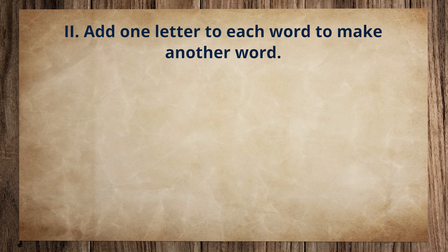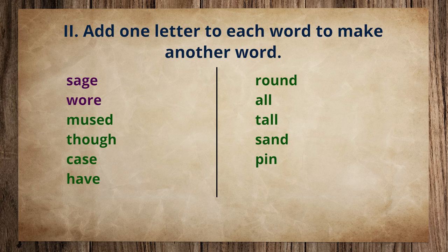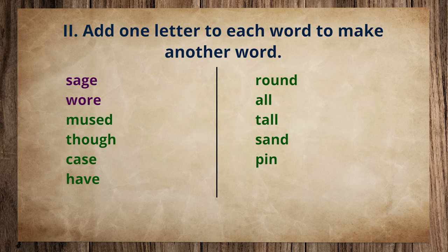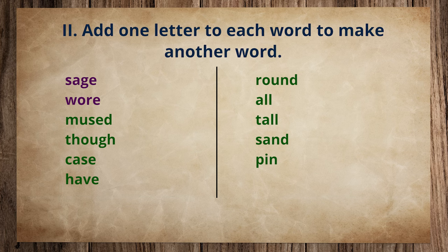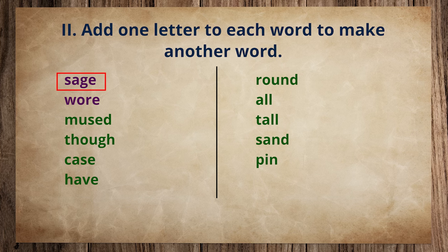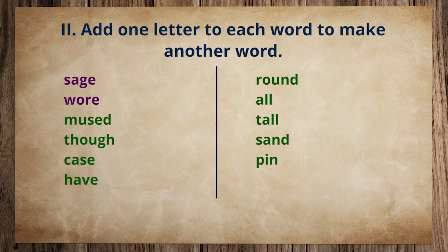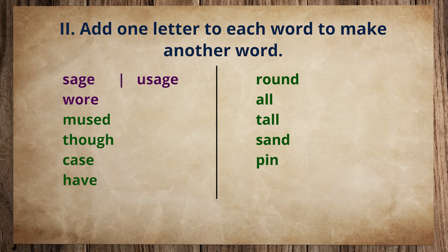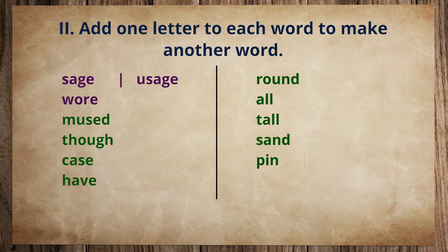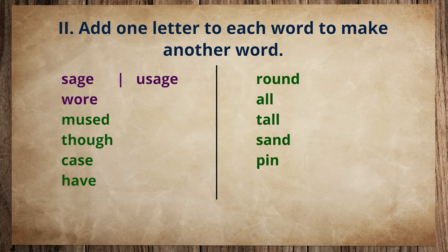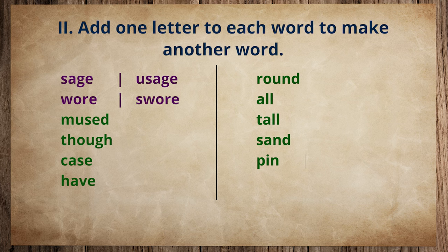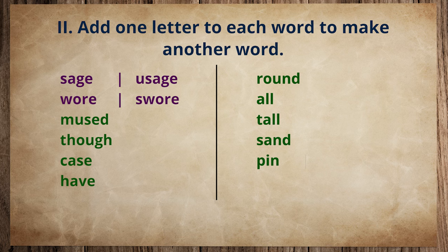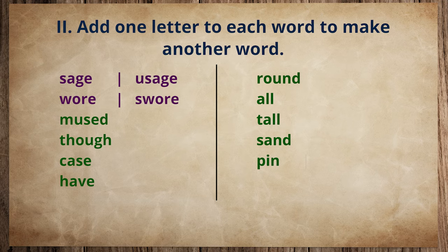There is another activity — add one letter to a given word to make a new word. For example, the word is 'sage' — adding the letter U makes 'usage.' The next word is 'war' — adding the letter S in front makes 'swore.' These are two examples done for you. There are more words on your screen and you will enjoy doing it.